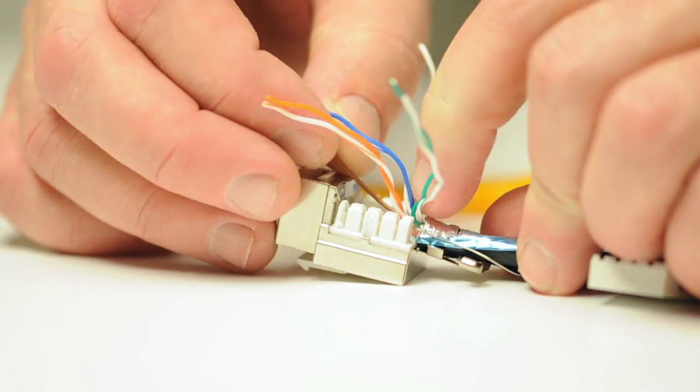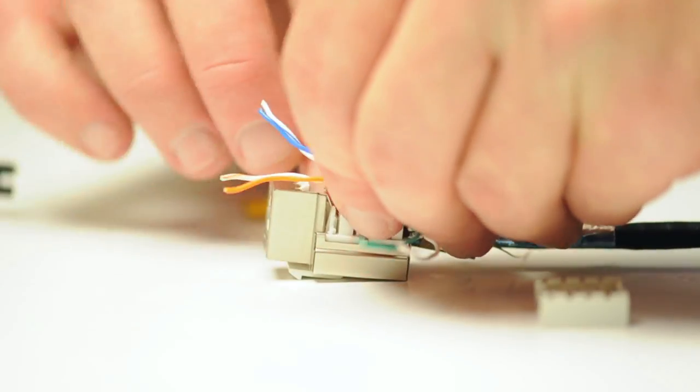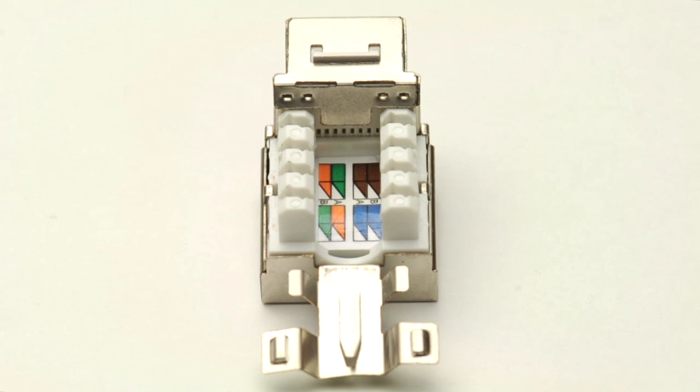Take the individual conductors and follow the color code, pushing them into the IDC connector. The color code shows the order of conductors.